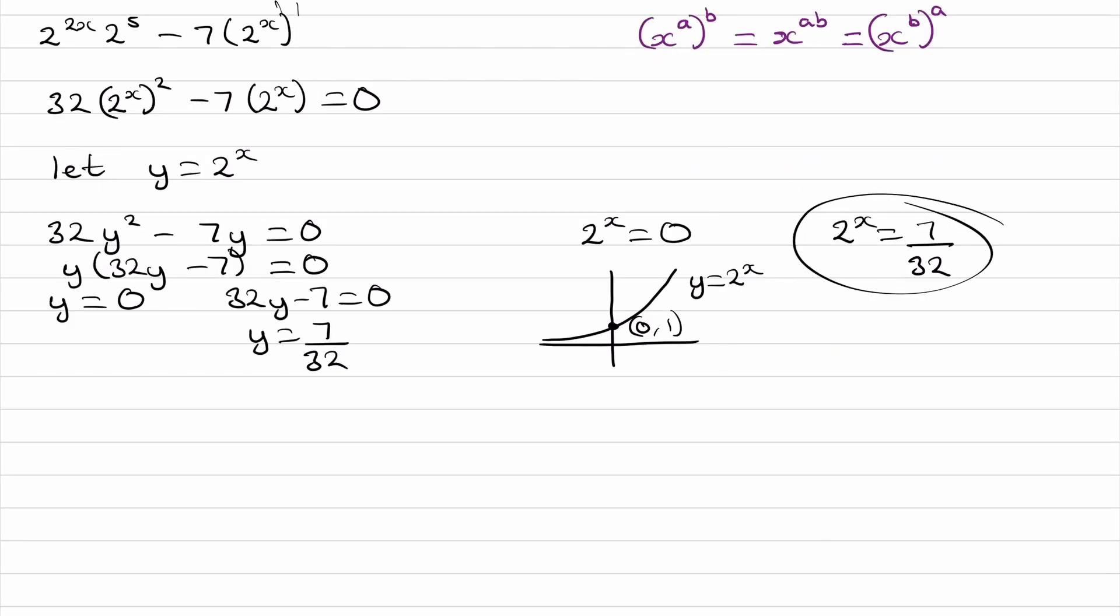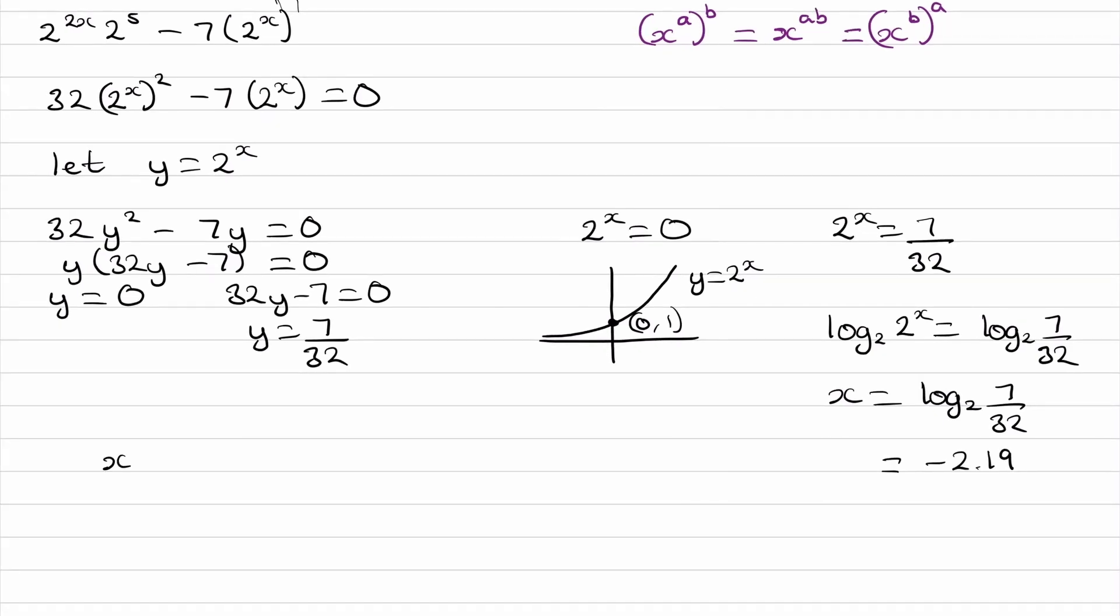This here we can solve. So if we were to do log to the base 2 of both sides, log to the base 2 of 2 to the power of x, log to the base 2 of 7 over 32, we end up with x is equal to the right-hand side, which if you type this in your calculator, gives minus 2.19. And that will be our final answer, x is minus 2.19.